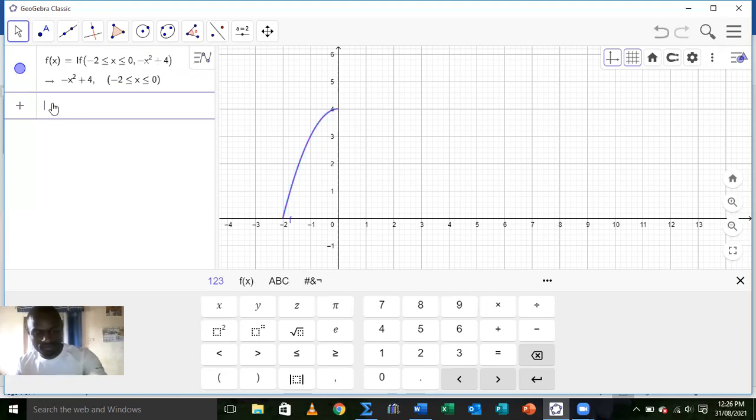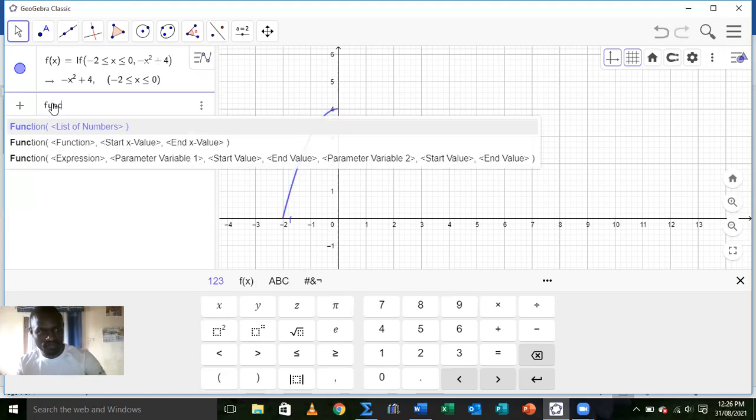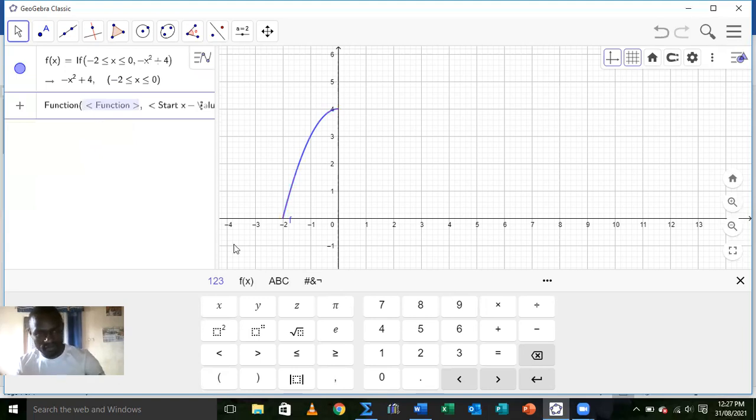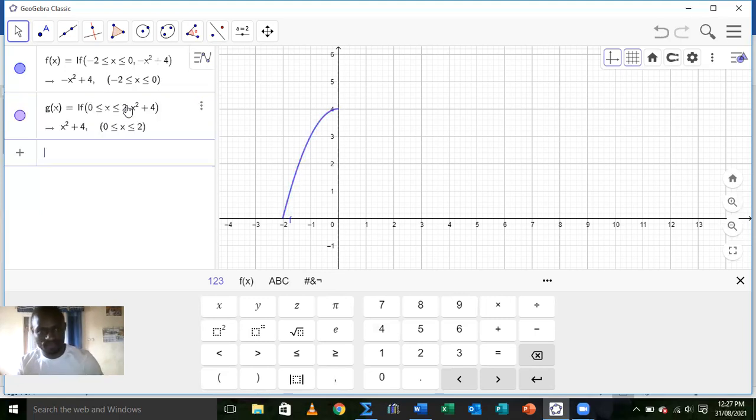Next, sketch the second part which is x² + 4. Start value in this case is from 0 to the end value which is 2. Enter the function. Good.